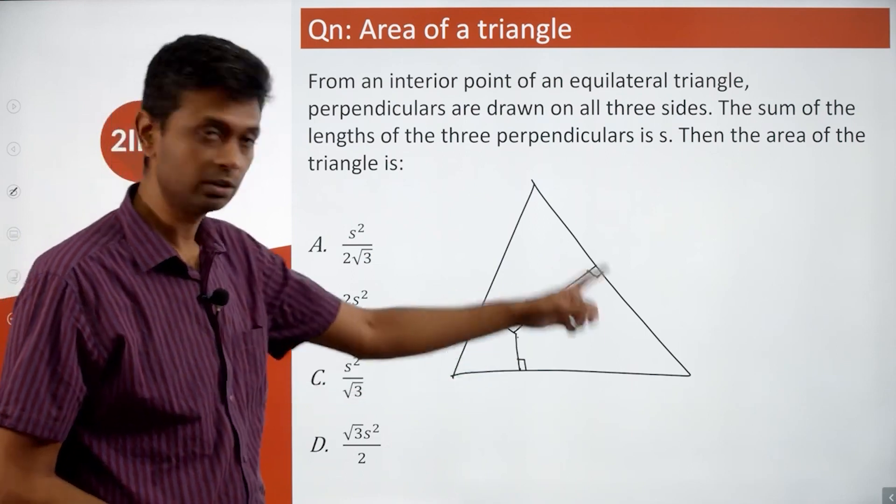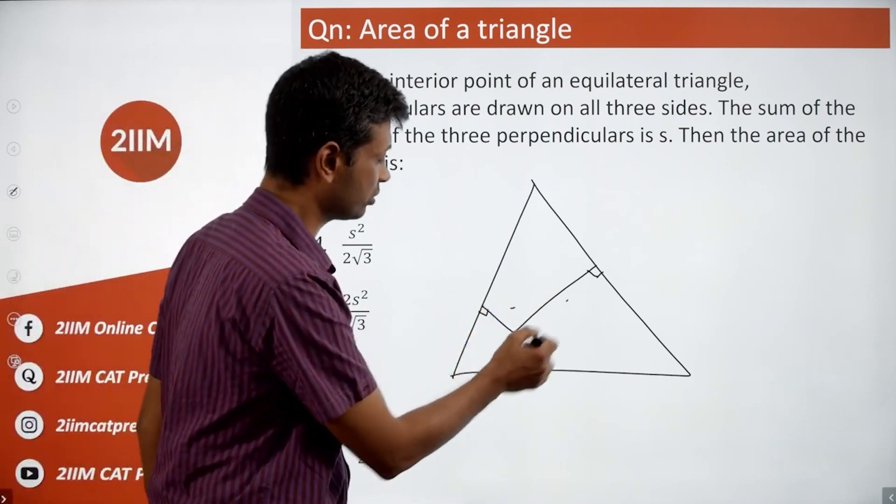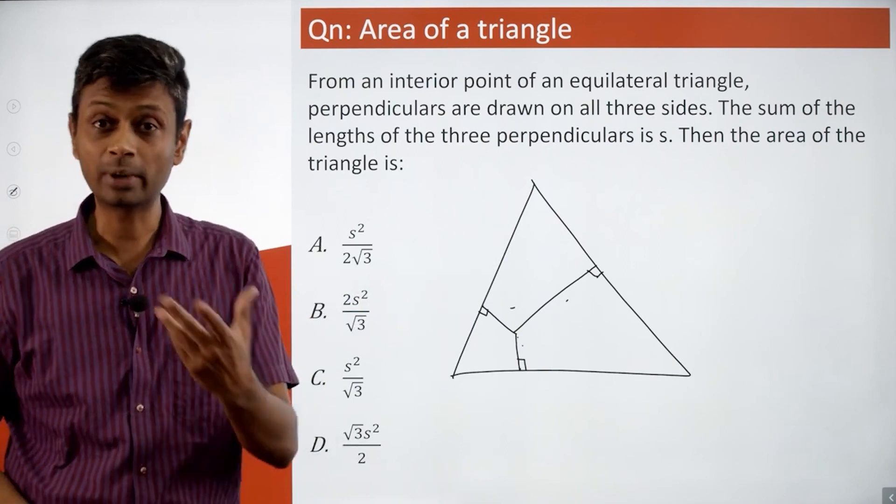You drop a perpendicular to three, what will these three add up to? The question is saying the sum of those three is a constant for an equilateral triangle.